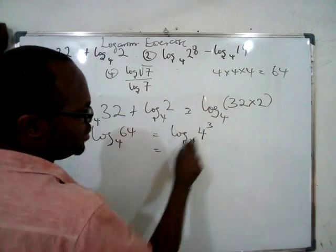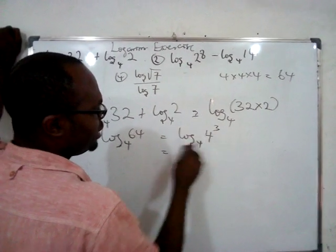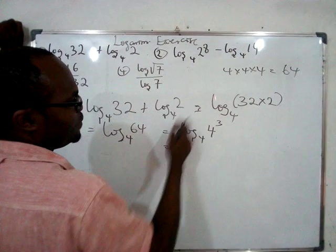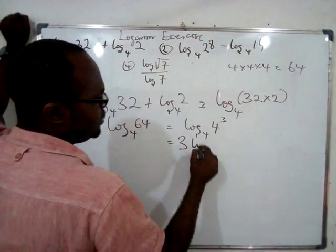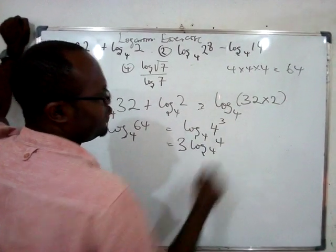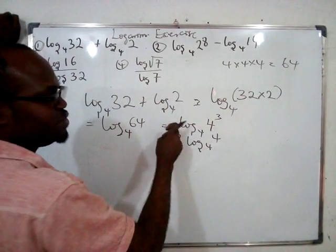The law of the same base as the number states that whenever we have this, you take this back. It will be log₄4. You take this to this place.